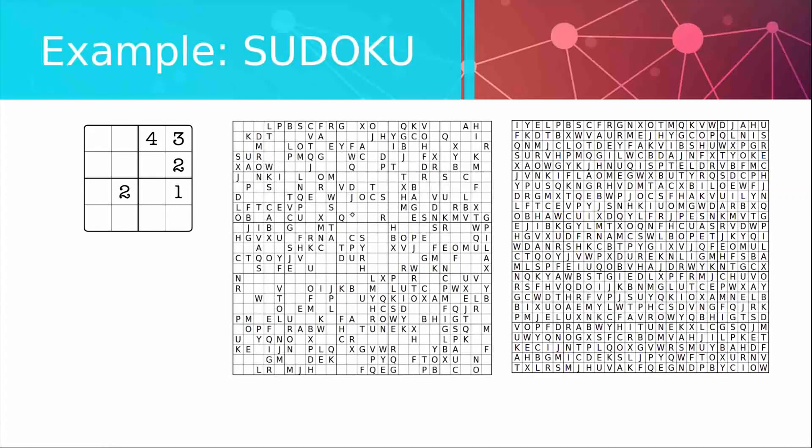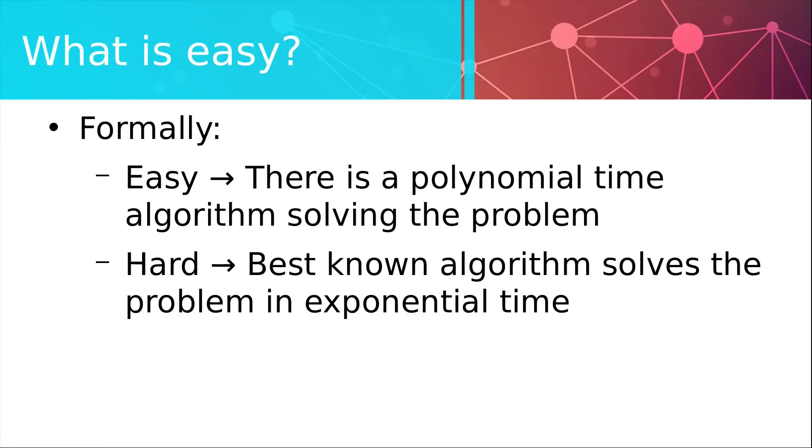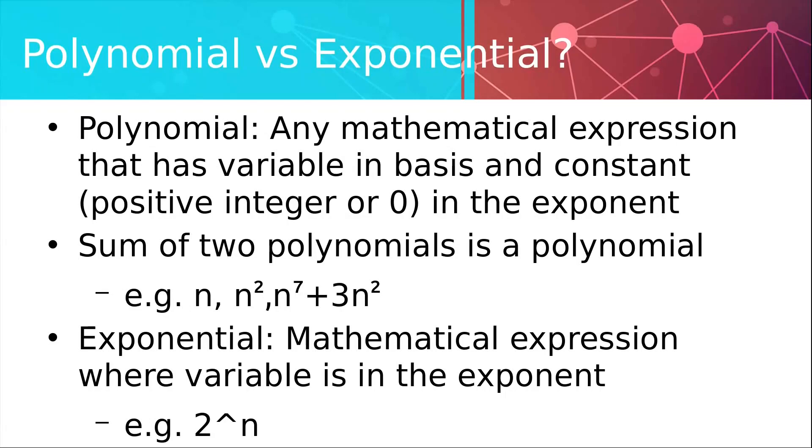But we will return to that in a minute. Let's first formally define the terms easy and hard problems. We say a problem is easy if there exists an algorithm that solves it in polynomial time, which we will explain what means in a second. On the other hand, a problem is hard if the best-known algorithm solves the problem in exponential time. Now, let's explain what those words actually mean. A polynomial is any mathematical expression that has a variable in a basis and constant in exponent. For example, n squared. Now, to fully define a polynomial, we must add one more condition. That is, sum of two polynomials is still a polynomial.